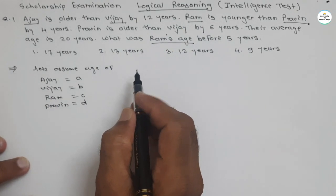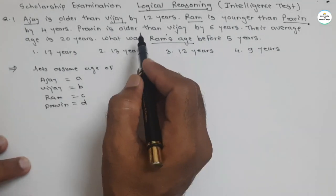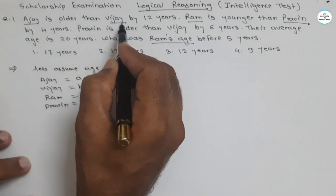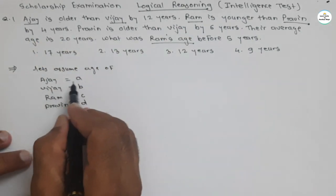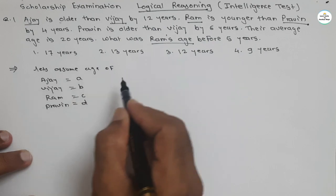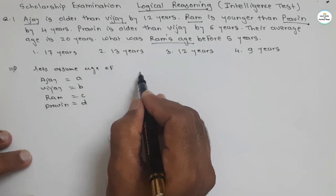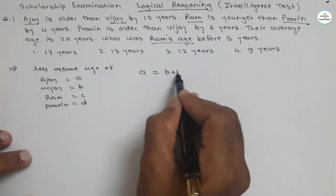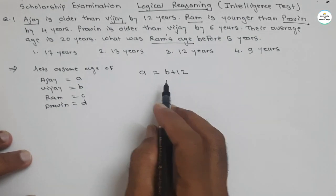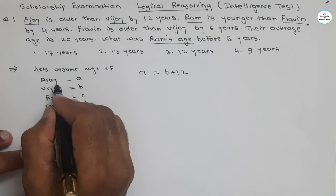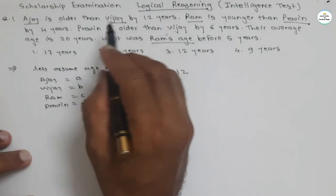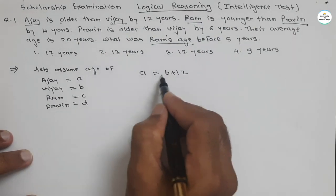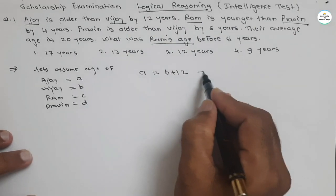Now we put the equations by considering the logic given in the question. Ajay is older than Vijay by 12 years — Ajay means a, so we can write the equation: a = b + 12. This means the age of Ajay is 12 years older than the age of Vijay. So a = b + 12 is our first equation.